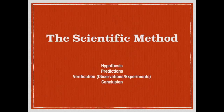Let's review the scientific method. In its basic form, it starts with an observation. Then we make a hypothesis — an educated guess — to figure out what's going on. Using that hypothesis, we make some predictions. Then we verify the hypothesis by making observations and conducting experiments. Based on the results, we come to some conclusions.